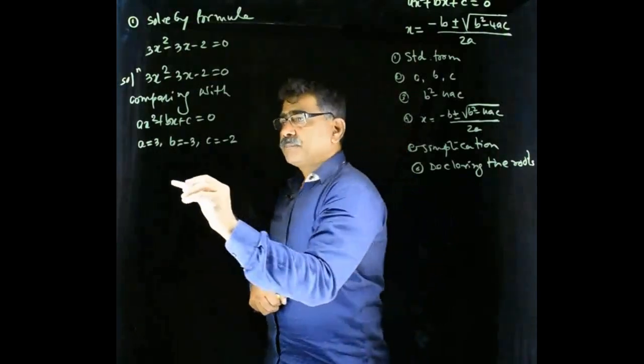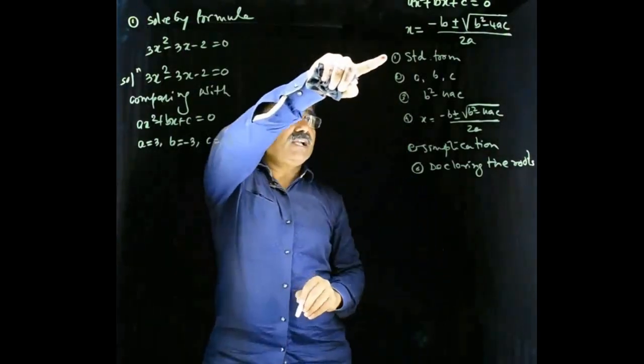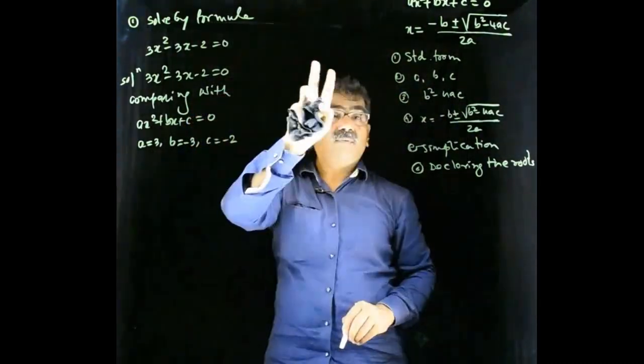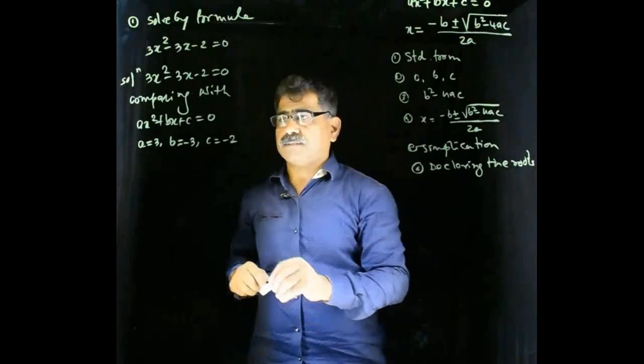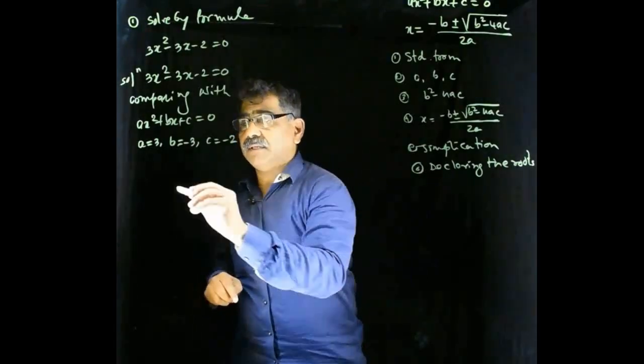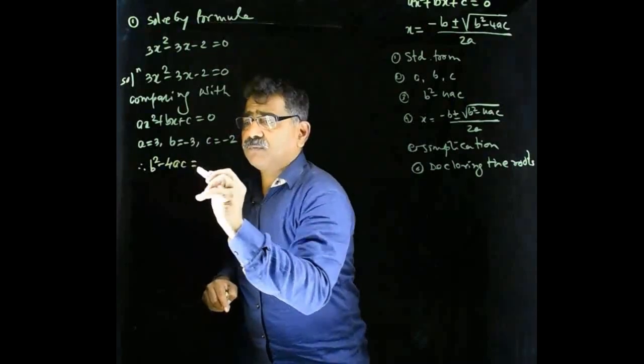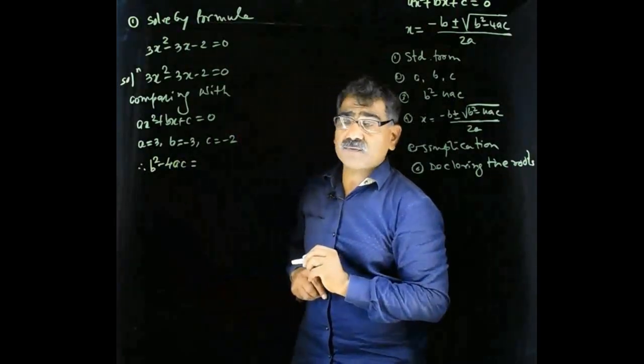Now, I told you that standard form already it is. ABC values, yes, I got it. Now, finding values of b square minus 4ac. So, I will write now here: b square minus 4ac. What is b square minus 4ac?